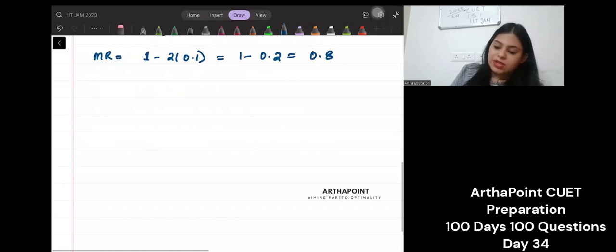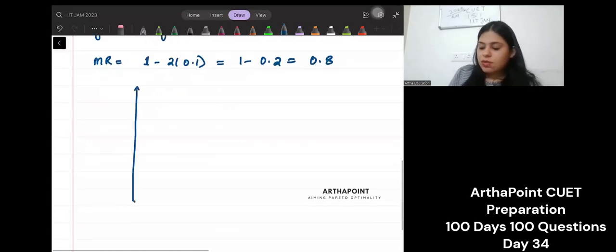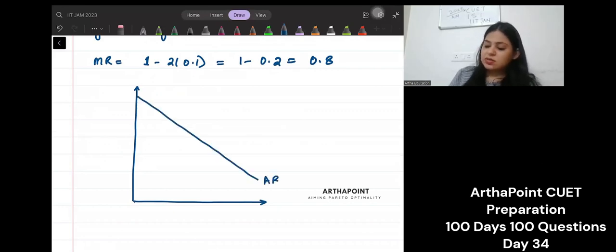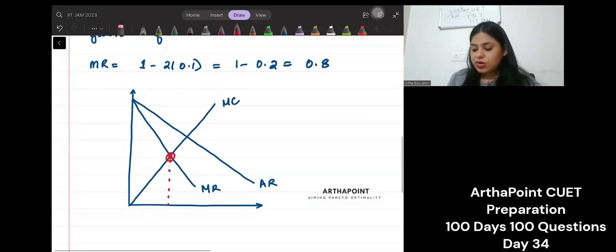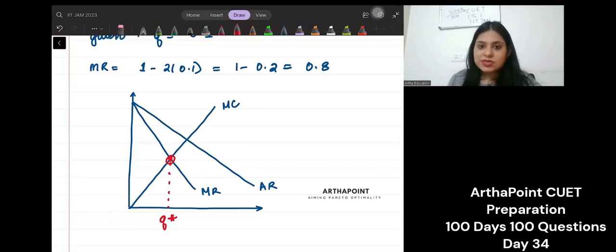Now, do you remember that when I talk about a monopoly, if this is AR, this is MR, this is MC, then MR and MC, they actually meet to determine the equilibrium quantity of the firm. This is what happens.